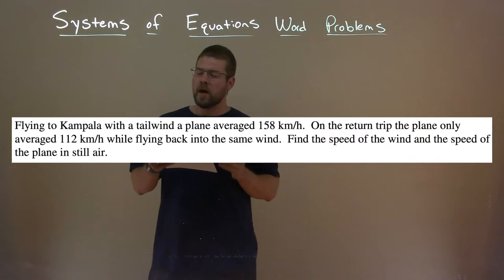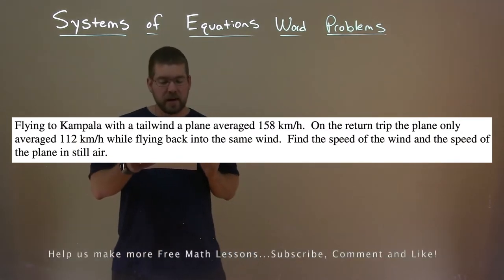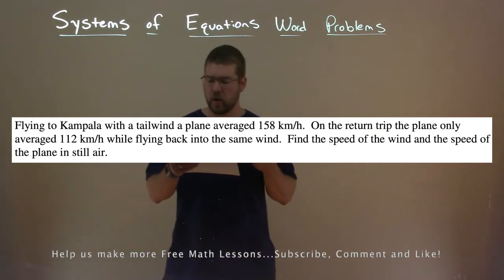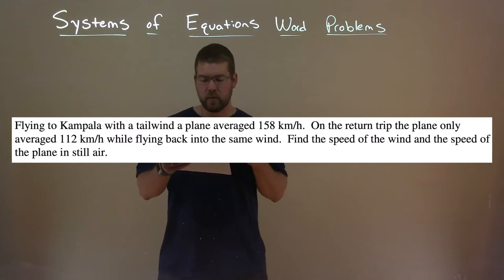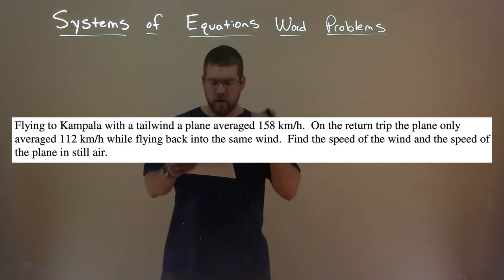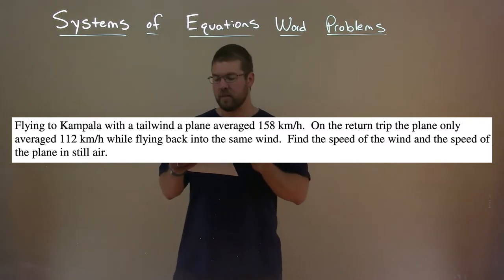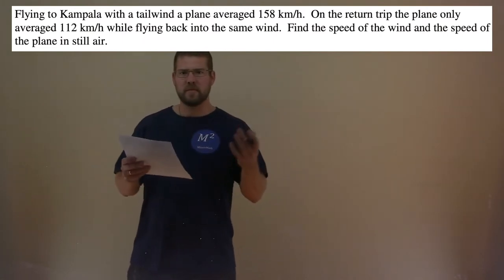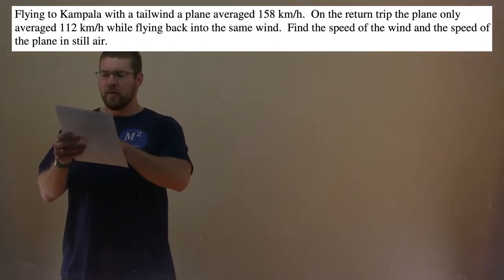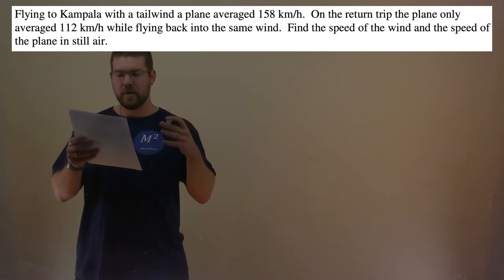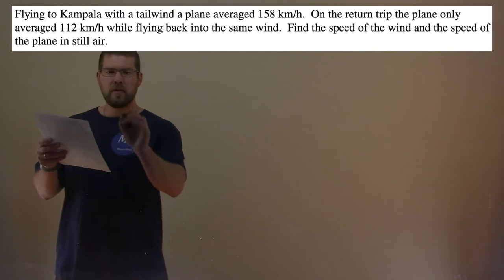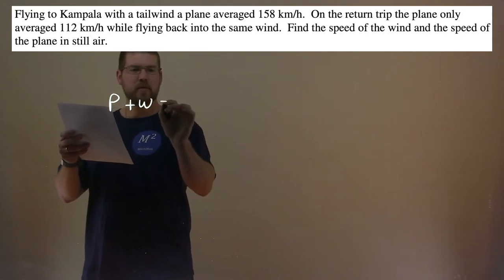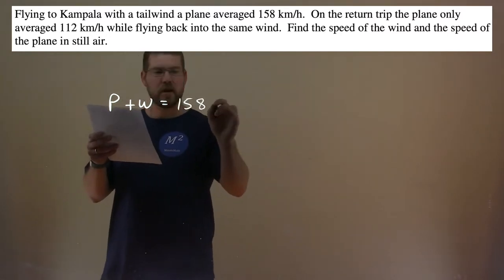We're given this problem: flying to Kampala with a tailwind, a plane averaged 158 km per hour. On the return trip, the plane only averaged 112 km per hour while flying back into the same wind. Find the speed of the wind and the speed of the plane in still air. We want to find a system of equations. With the tailwind, the speed of the plane P plus the tailwind W is equal to 158 km per hour.